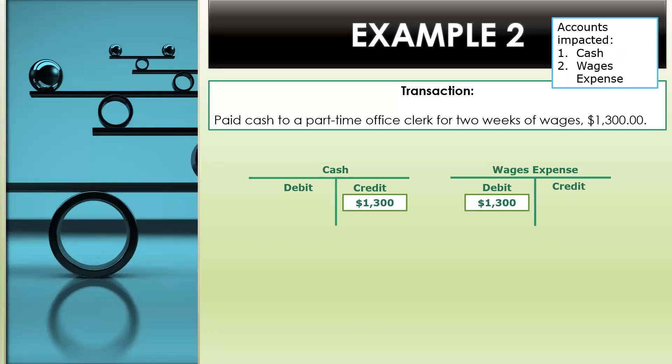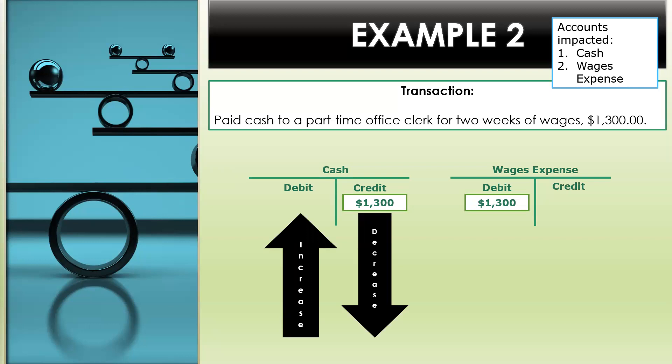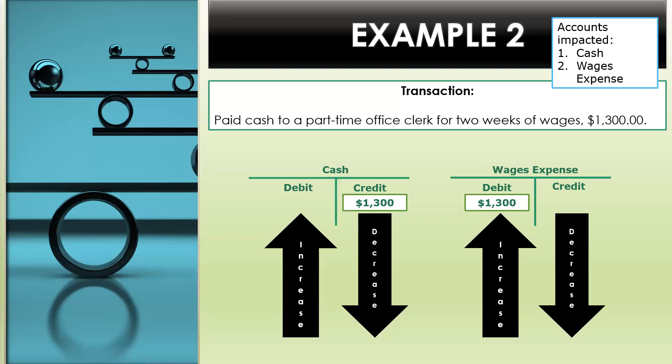Example two — business transaction: paid cash to a part-time office clerk for two weeks of wages in the amount of $1,300. This business transaction impacts the cash account and wages expense. You can see here we have a debit and credit, and this business transaction impacts two accounts. The first thing we will do is credit cash in the amount of $1,300; this credit to cash will decrease the account. For the wages expense, we will debit this account in the amount of $1,300, and debits to expense accounts increase those accounts.